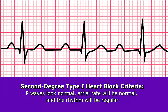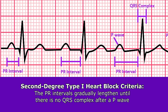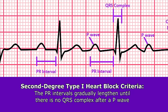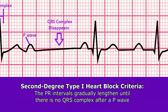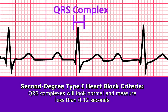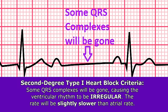For the characteristics and criteria of second-degree type 1: you will see normal-looking P waves, a normal and regular atrial rate, and the hallmark — gradually longer PR intervals until a QRS complex is dropped behind a P wave, after which the cycle repeats. When QRS complexes do appear they look normal, measuring less than 0.12 seconds. Because some QRS complexes are missing, the ventricular rhythm is irregular and the ventricular rate is slightly slower than the atrial rate.